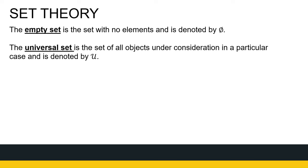Now two very special sets. The empty set doesn't sound like much, but it is important. It's a set with no elements in it, and it's denoted by the symbol ∅. Another way to denote it is having the curly brackets with nothing in between. So those are two ways to denote an empty set — a set with no elements. It's still a set, but it doesn't have anything in. Think of it as an empty bag.